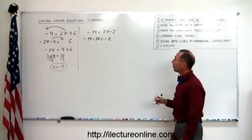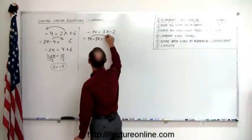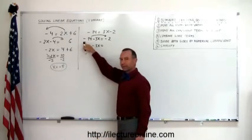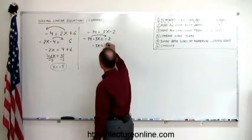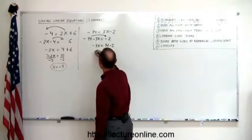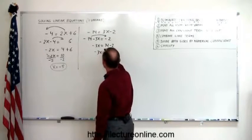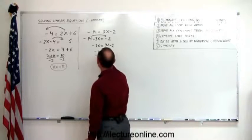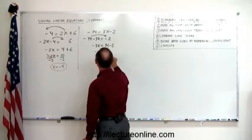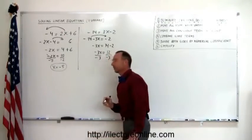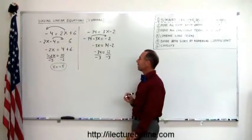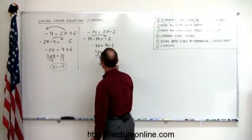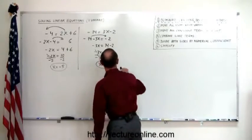The next step: move all the constants to the right. We move the minus 14 across; we have minus 3x, and again, crossing the equal sign the sign changes, so it becomes a positive 14 minus 2. So minus 3x equals 14 minus 2. Now combine like terms — that becomes 12. Finally, divide both sides by the numerical coefficient in front of x, which is negative 3. This cancels out, so x equals 12 divided by negative 3, which is negative 4.